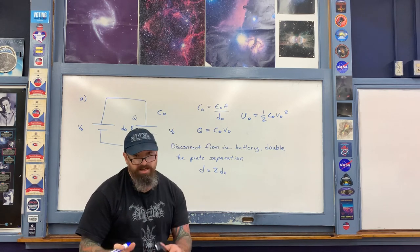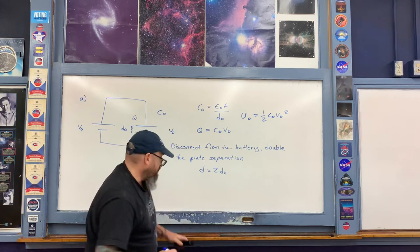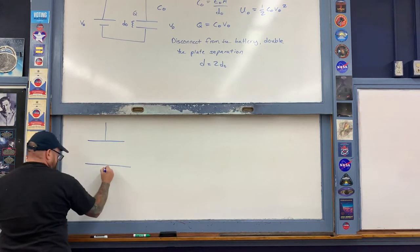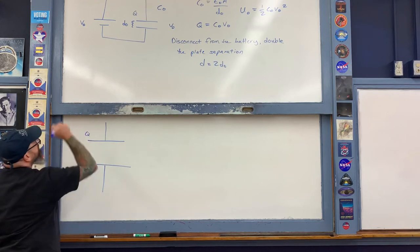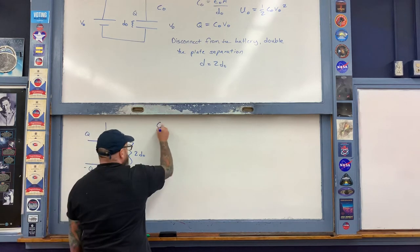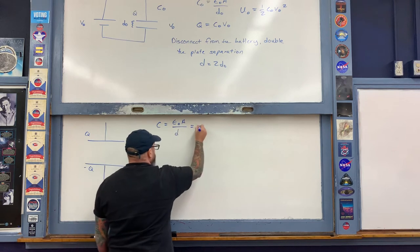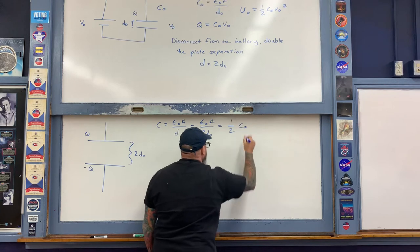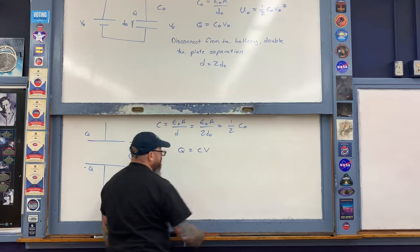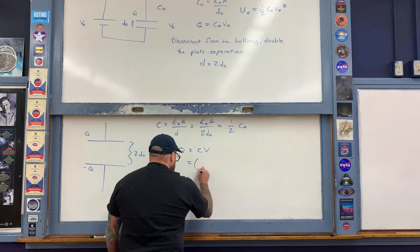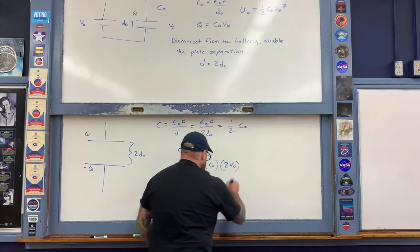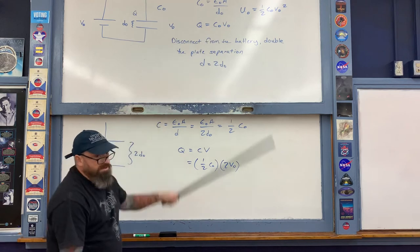The disconnected capacitor retains charge Q with new plate separation 2D₀. The new capacitance C = ε₀A/(2D₀) = ½C₀. Since Q = C·V must hold and Q is unchanged, the new voltage V = Q/C = Q/(½C₀) = 2V₀ — the voltage has doubled from its original value.